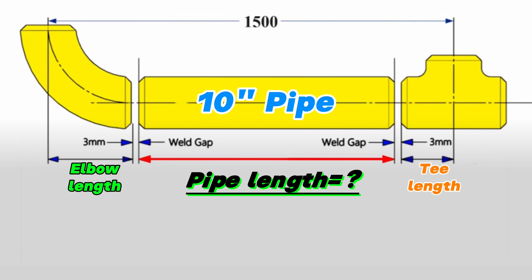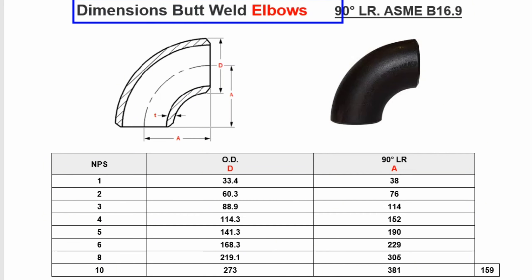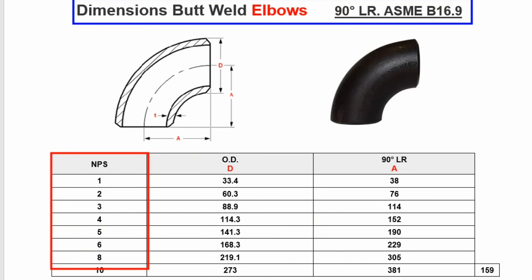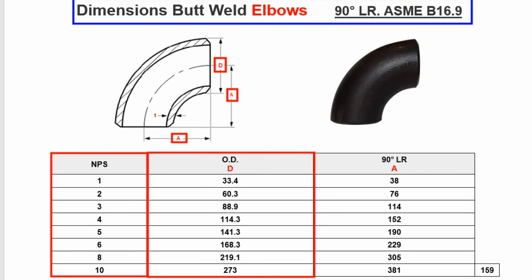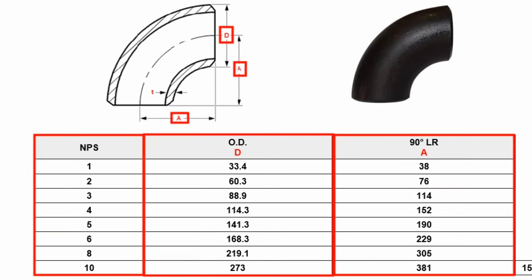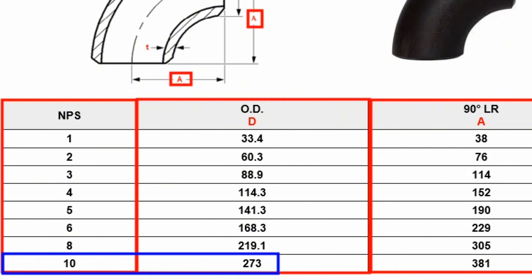To find the length of the 90-degree butt weld elbow and equal tee, we should look at the dimension chart table of the 90-degree butt weld elbow. The nominal pipe sizes, NPS, of elbows are shown in the first column of this table. The letter D written on the 90-degree elbow indicates the outside diameter and is shown in this column. The letter A indicates the center-to-end dimension of the 90-degree elbow and is shown in this column. Since the pipeline in our video is 10-inch, we look at the row written as 10-inch in the NPS column. This table shows that 10-inch butt welded 90-degree elbows have an outside diameter of 273 millimeters and a center-to-end dimension of 381 millimeters.